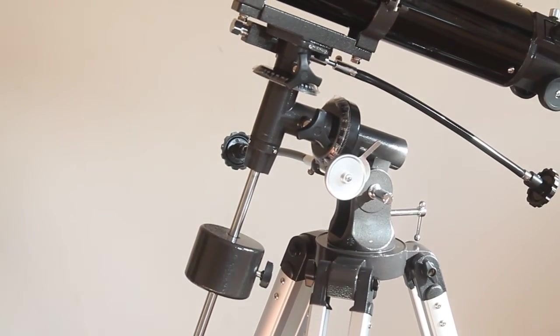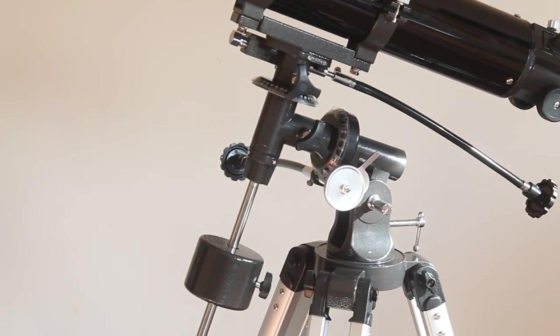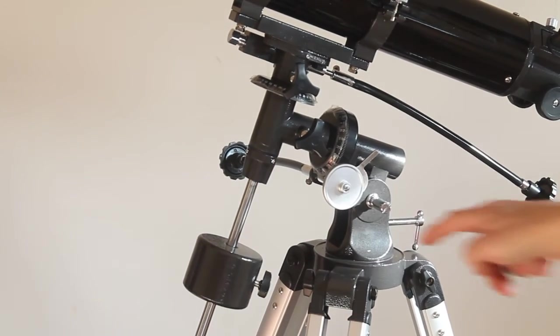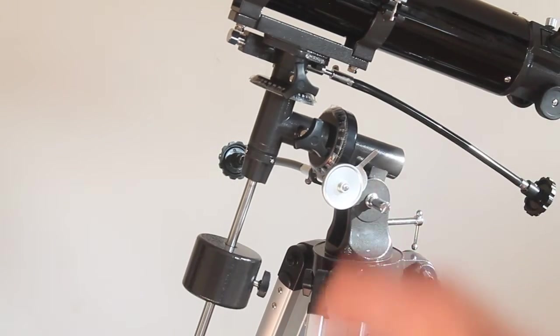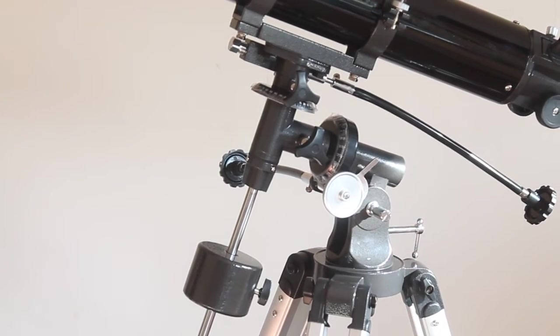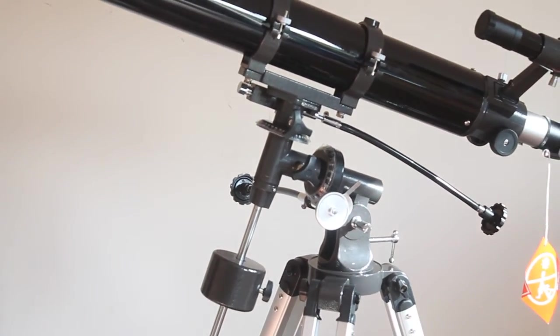You may notice there on the mount it looks like that isn't quite wide enough but that's okay because it uses the same legs as the Sky Watcher AZ3.